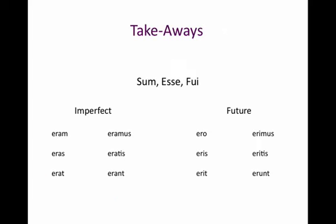Alright, so our takeaways for this lesson are basically: you just have to memorize the imperfect and the future tense of sum, esse, fui, and memorize the translations for all of these. Remember, this is our irregular verb, so the forms do not come from the stem of the second principal part, esse, which is the infinitive. These are irregular forms that you need to memorize.